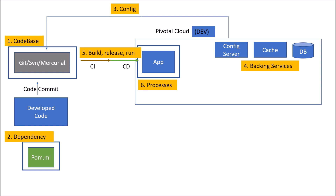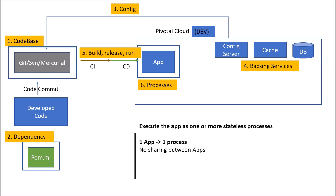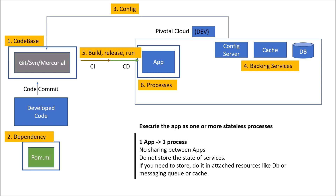The next factor is process. The process factor says: execute the app as one or more stateless processes. Stateless means two apps should not share anything between them. Any sharing of data or context should happen through endpoints only. If you want to store the state of the application, store it in backing services like cache, DB, or messaging queue. One app, one process should be modeled. No sharing between apps should be done directly. Any sharing should happen through endpoints, and do not store the state of services in the application itself.